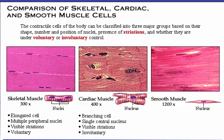Cardiac muscle has branching cells with a single central nucleus. Cardiac muscle cells are also striated. Unlike skeletal muscle, cardiac muscle cells are under involuntary control.